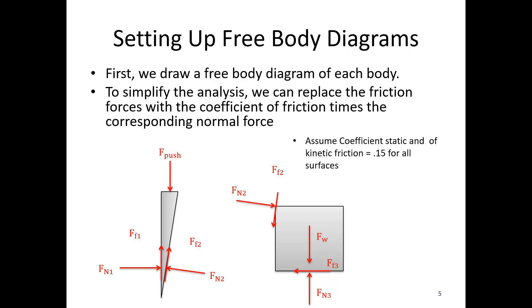If we assume a static or kinetic coefficient of friction of 0.15 for all surfaces, we'd replace our friction forces with 0.15 times Fn1, 0.15 times Fn2, and 0.15 times Fn3. We've gone from three unknown normal forces and three unknown friction forces to just three unknown normal forces. This is usually going to be necessary to make the problem solvable.